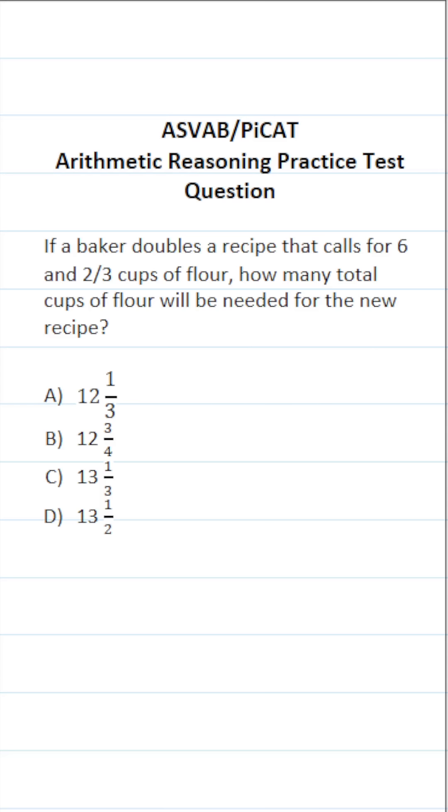This arithmetic reasoning practice test question for the ASVAB and PiCAT says, if a baker doubles a recipe that calls for six and two-thirds cups of flour, how many total cups of flour will be needed for the new recipe?